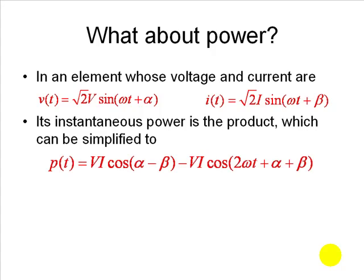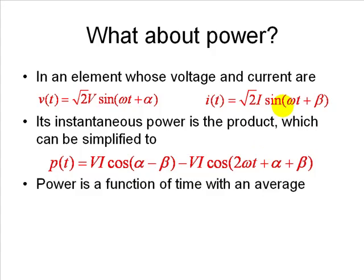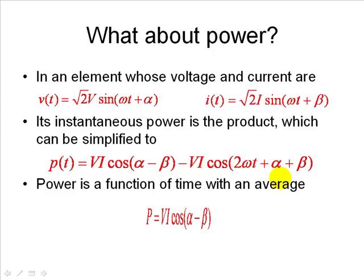The power is also a function of time, changing at twice the angular frequency of the voltage and current. But if we find the average of that instantaneous power function, the average turns out to be the first term — RMS volts, RMS amps, and the cosine of a certain angle. What angle is that?